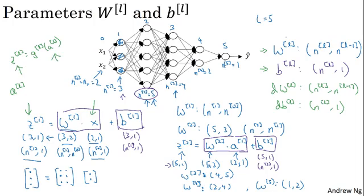Now let's see what happens when you have a vectorized implementation that looks at multiple examples at a time. Even for a vectorized implementation, of course, the dimensions of w, b, dw, and db will stay the same.